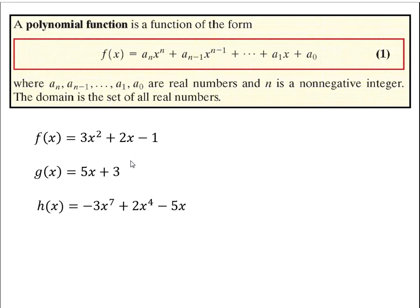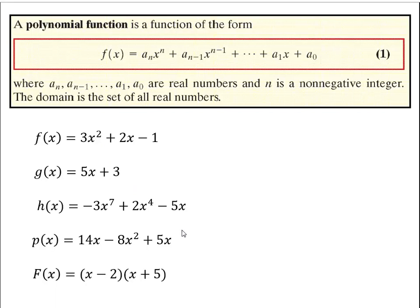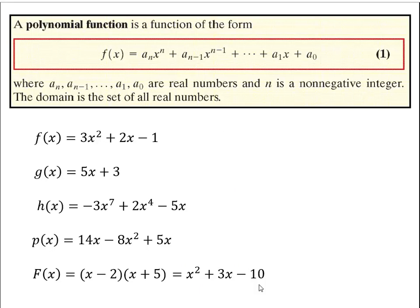Here's another example of a polynomial equation — notice we have powers of x that are non-negative whole number integers, and coefficients that are real valued. Even if the terms are mixed up and not written in decreasing power order, it's still a polynomial function. Even a factored equation is polynomial — if I foil it out I'd get x squared plus 3x minus 10. Polynomials written in factored form are much more convenient to graph because you can see the x-intercepts directly. Setting y equal to 0, x equals 2 and x equals negative 5 are immediately visible, so we prefer factored forms whenever possible.